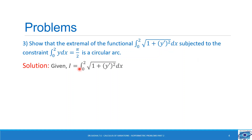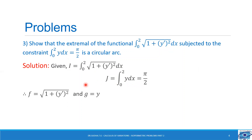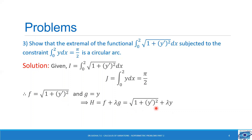So we need to show that the solution represents a circle. Given i is equal to integral 0 to 2 of root of 1 plus y' dx, j is equal to integral 0 to 2 of y dx equal to 5 by 2. Therefore, f will be equal to root of 1 plus y' square and g is equal to y. Let us form the new function h equal to f plus lambda g, equal to root of 1 plus y' square plus lambda y, where lambda is the Lagrange multiplier.